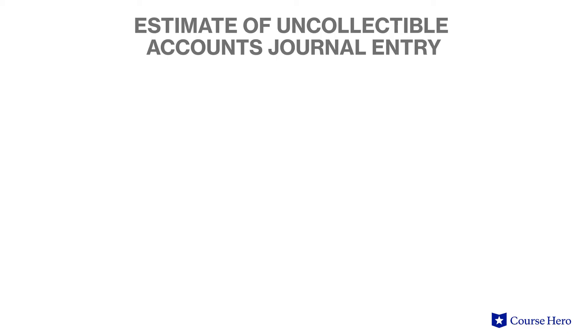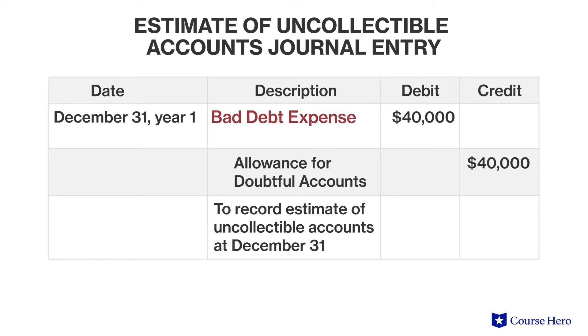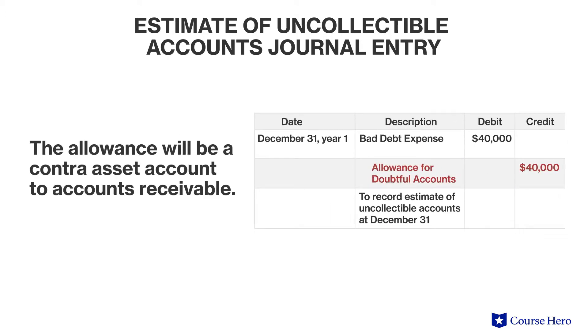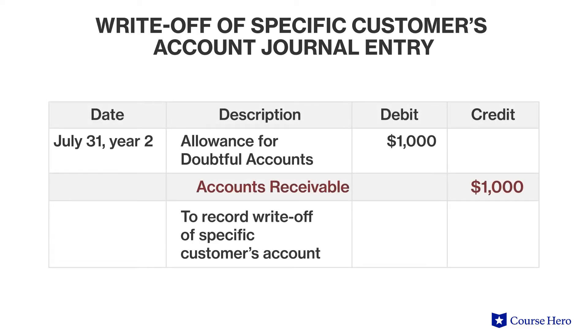Suppose that a company has accounts receivables totaling one million dollars. The company determines that forty thousand dollars of its accounts receivable may be uncollectible. This estimate is based on past experience that four percent of accounts receivables becomes uncollectible. The first entry would involve increasing bad debt expense and generating an allowance, which will be a contra asset account to accounts receivable. Suppose that a customer who owed the company one thousand dollars actually goes bankrupt and will not pay any of the one thousand dollars.